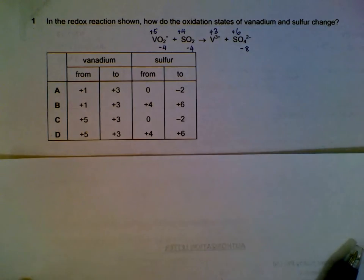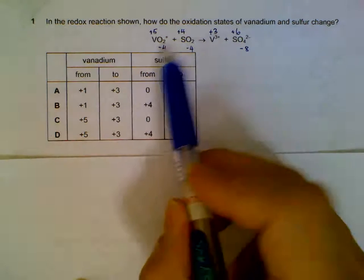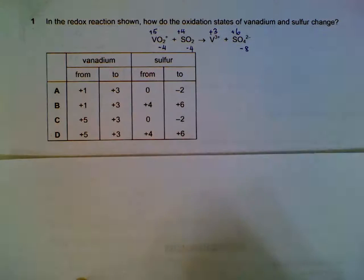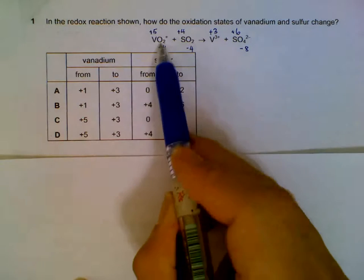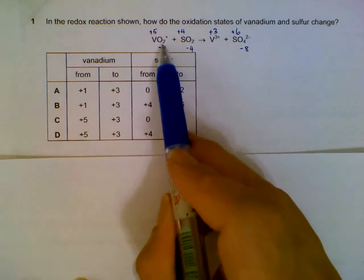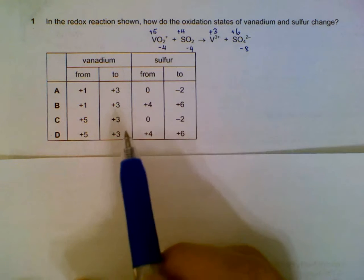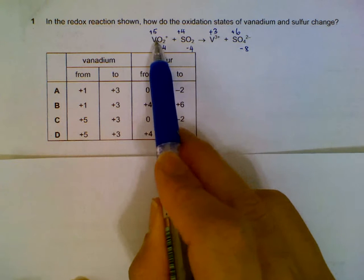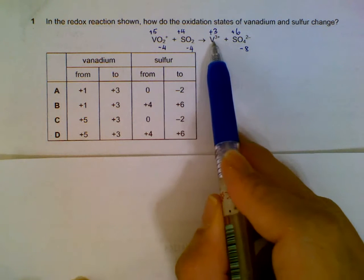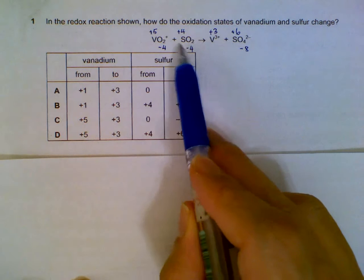Number one: oxidation states of vanadium and sulfur. First, we'll use the idea that each oxygen will be minus two in the compound. This allows us to calculate what vanadium and sulfur are. V will be plus five and plus three based on the charge. Sulfur will be plus four and plus six.